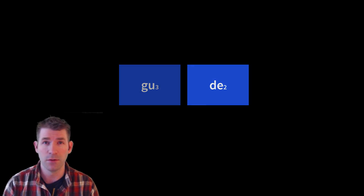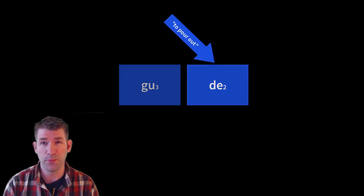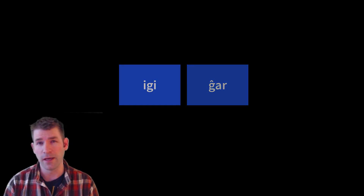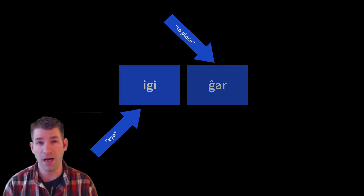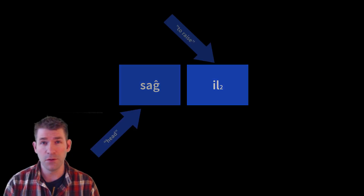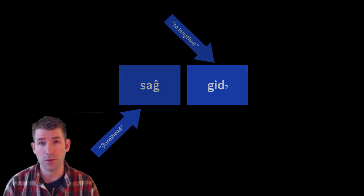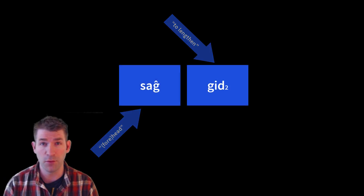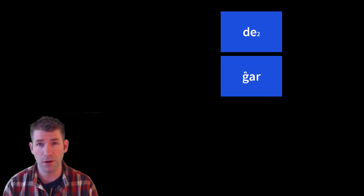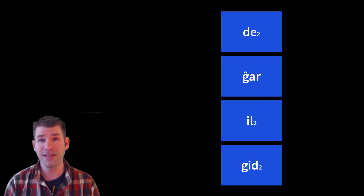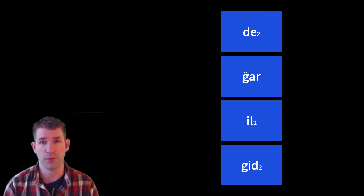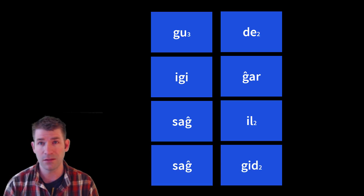Gu3 detu: to speak — literally, to pour out detu, the voice, gu3. Igi nyar: to look at — literally, to place the eye. Sang iltu: to raise the head. Sang gidtu: to become angry — literally, to lengthen the forehead. Notice that in each of these examples, there is a verbal component — detu, nyar, iltu, gidtu — and a noun that is the direct object of that verb: gu3, igi, sang.